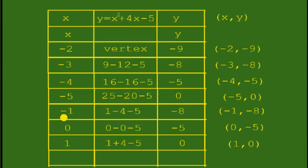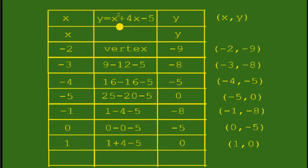If x is negative 1, substitute the values and simplify to get negative 8. So the ordered pair is negative 1 and negative 8. If x is 0, substitute and simplify: you get negative 5. So the ordered pair is 0 and negative 5.